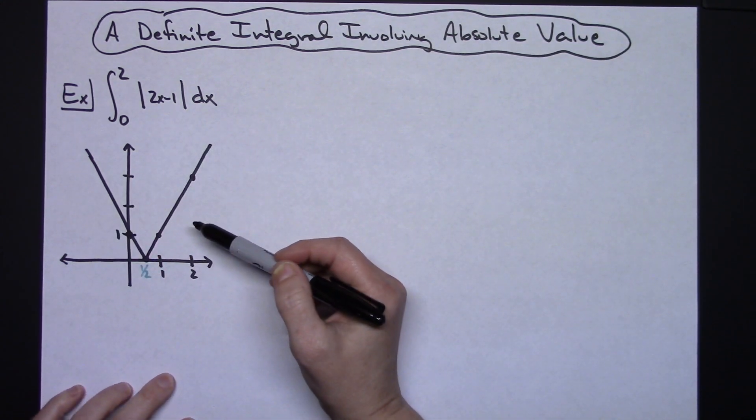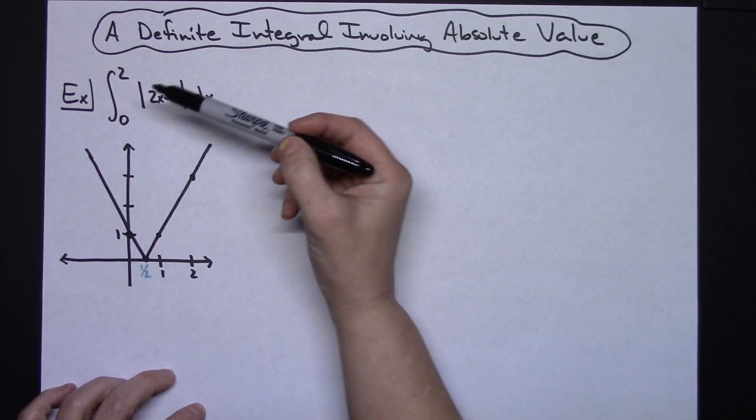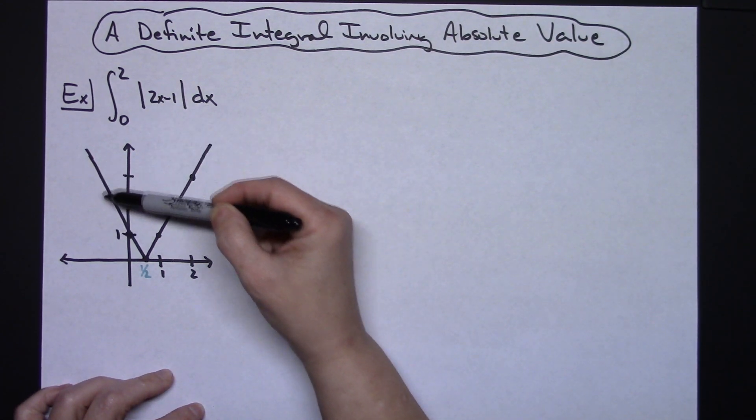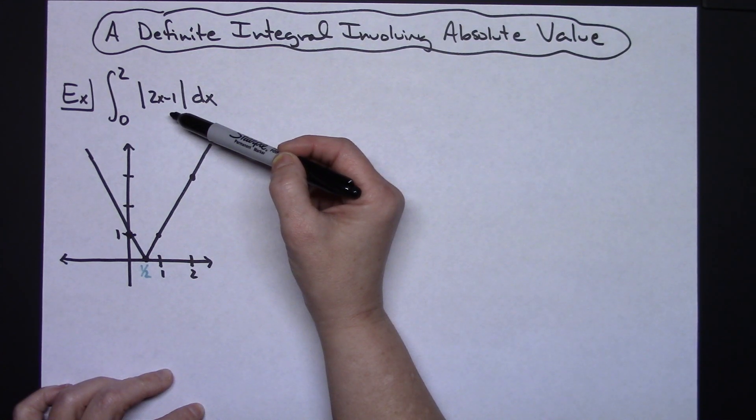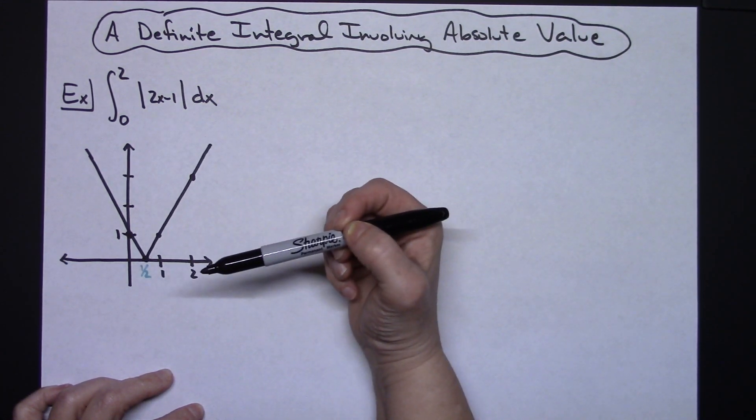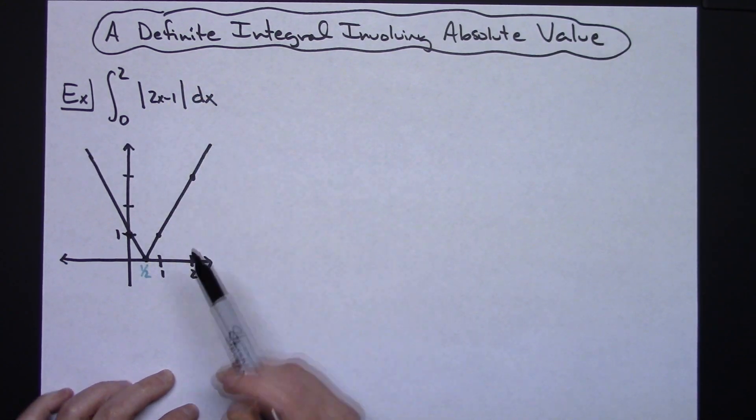That's what I've done here and I did it ahead of time so it'd be a little more accurate. Absolute value graphs are v's. It's going to shift to the right one half from the origin. So there's my vertex at one half and then I've got my absolute value there.